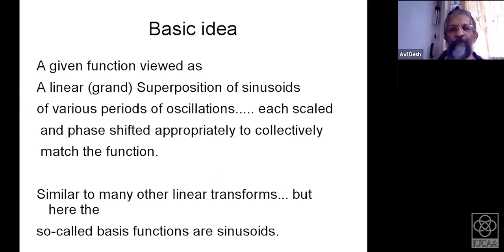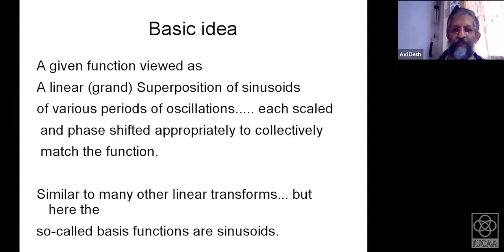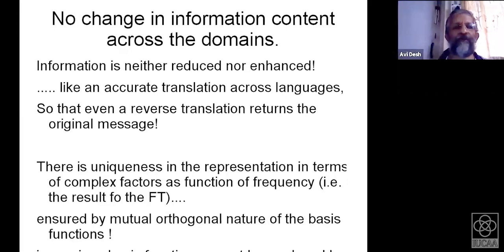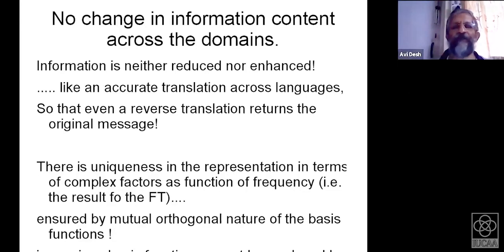This is like model fitting — similar to polynomial fits we routinely do. Instead of different-order components coming with coefficients, here we have a set of sinusoids coming with their coefficients. The idea is basically similar to many other linear transforms, but here the basis functions are sinusoids. This is a linear transform, so the important thing to recognize is there is no change in information content across domains. When you take the Fourier transform of a function, you get information in another domain — the Fourier domain — of the original function.